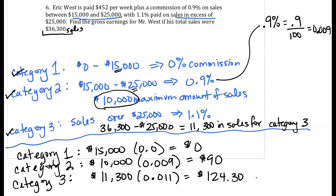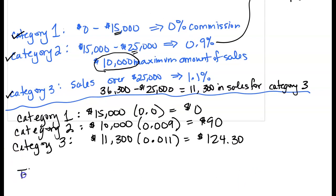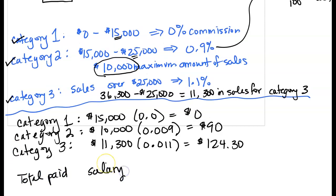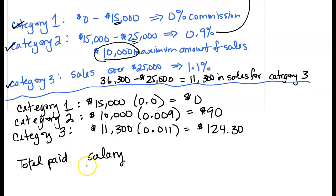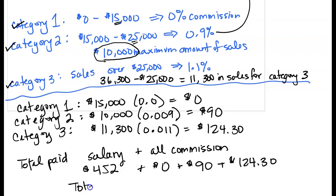Now to finish up, we're going to take the salary that they earn plus all three of these commissions. So total paid is the salary of $452 plus all commission. And our commissions were $0 in Category 1, $90 in Category 2, and $124.30 in Category 3 for a total of $666.30.